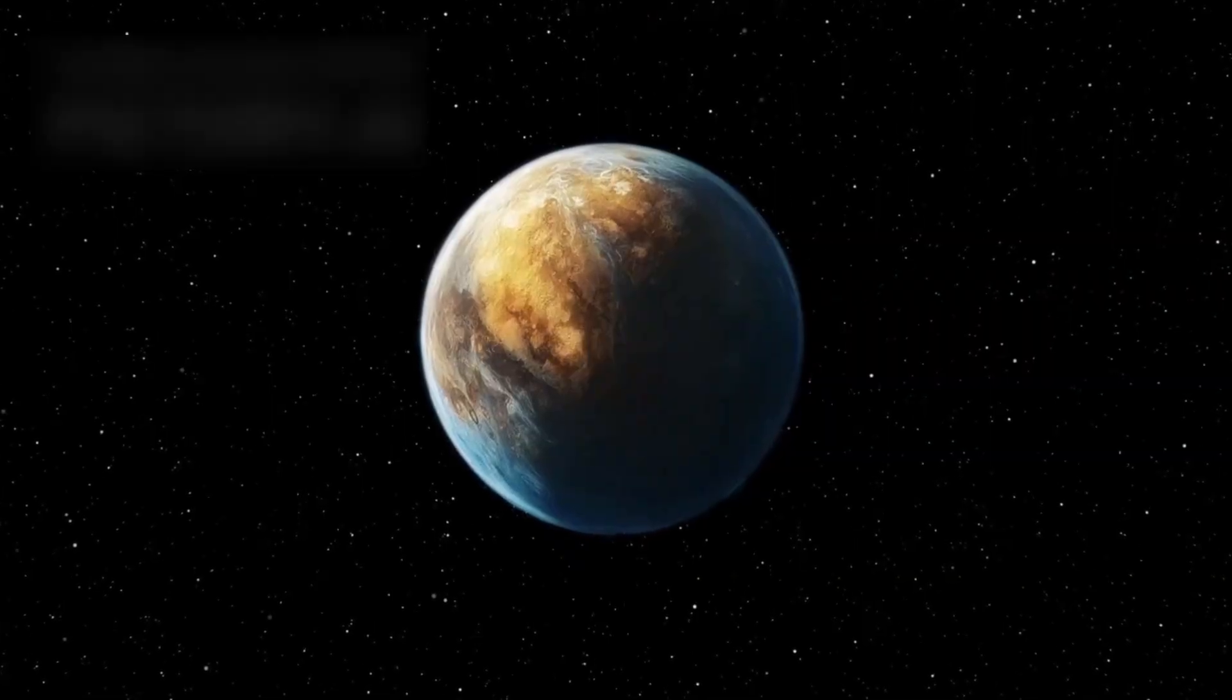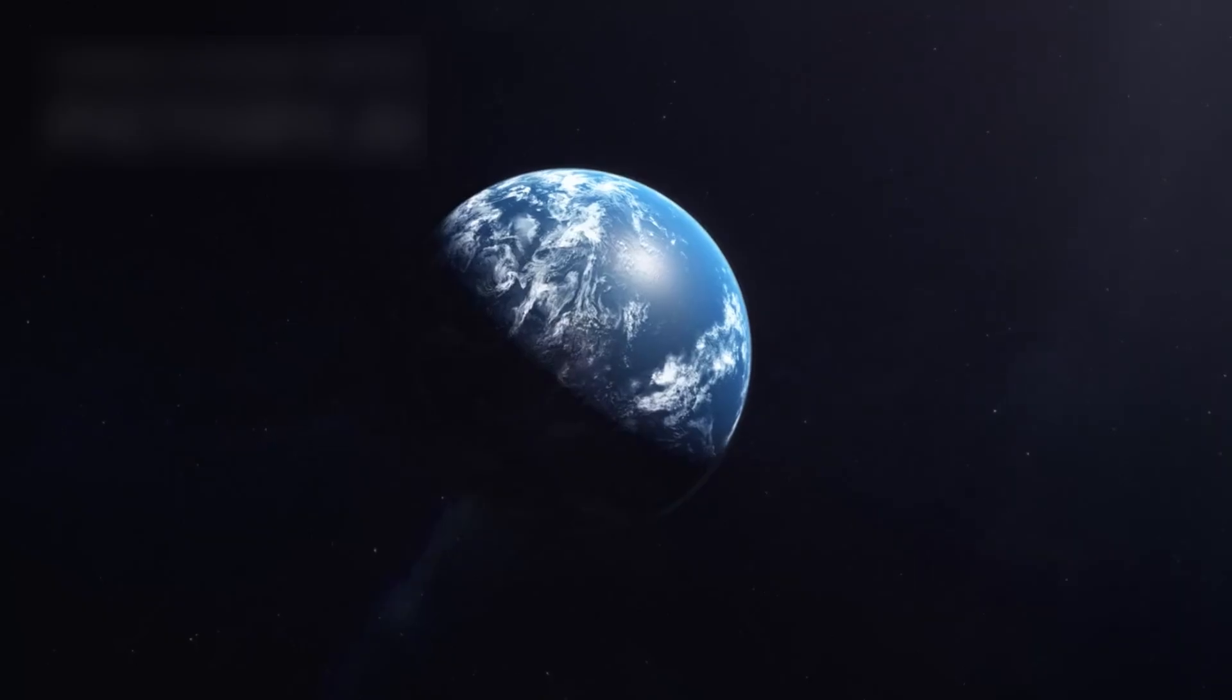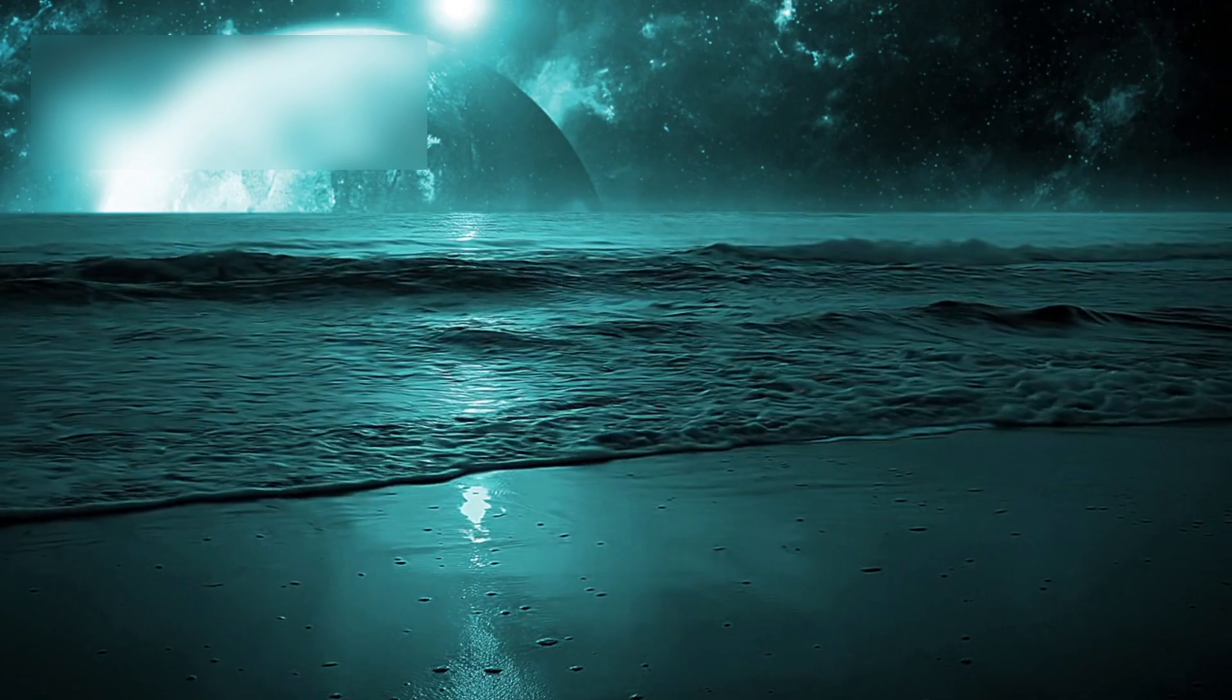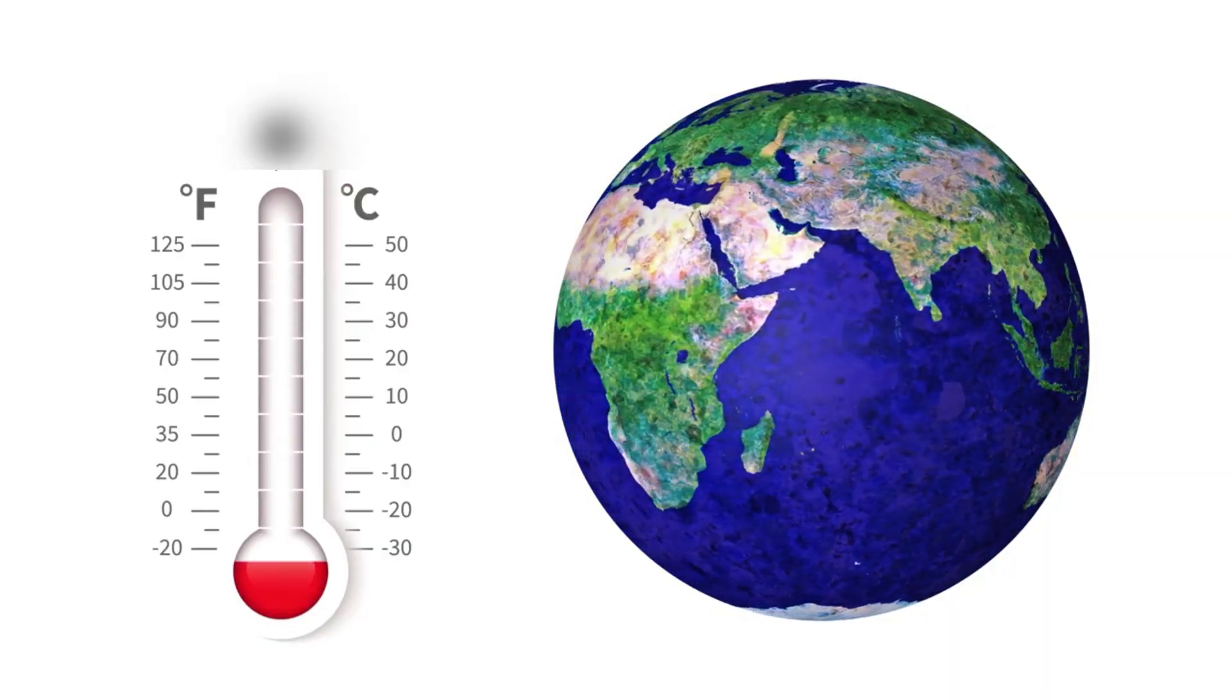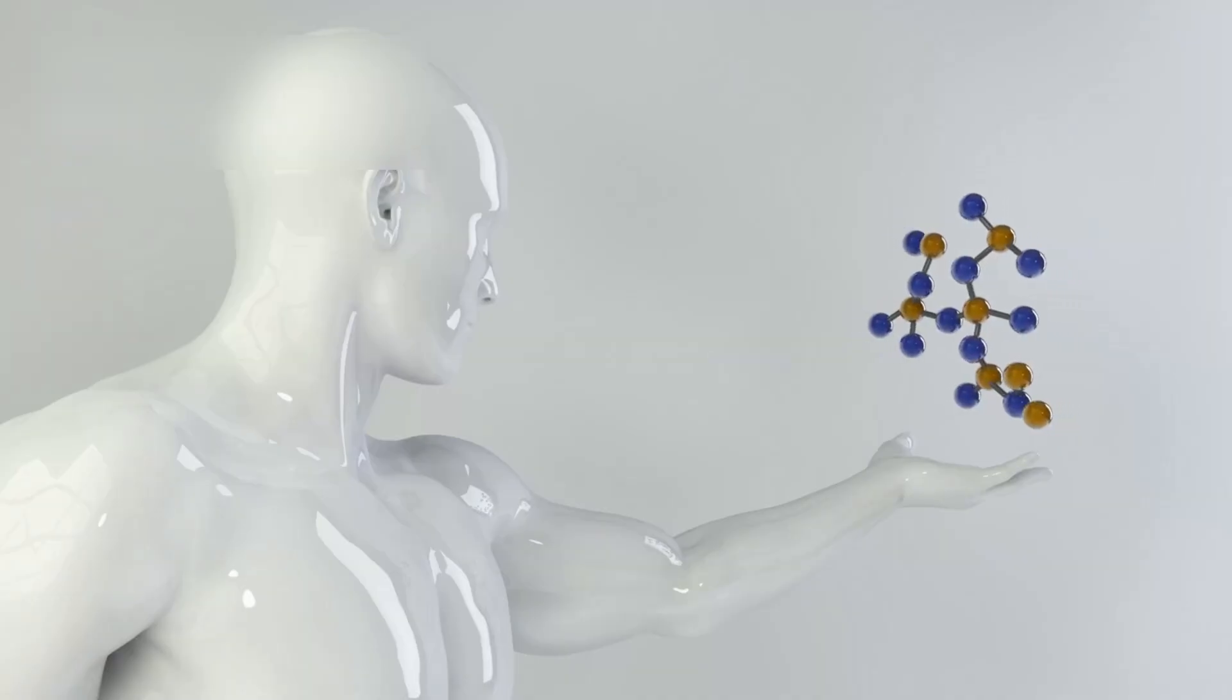Recent theories have expanded this vision. A new class of exoplanets is emerging, worlds that don't fit the rocky or gaseous divide. They're being called Hycean planets, covered in planet-wide oceans trapped beneath thick hydrogen skies. Surface temperatures might reach 200 degrees Celsius, but under pressure, water remains liquid.